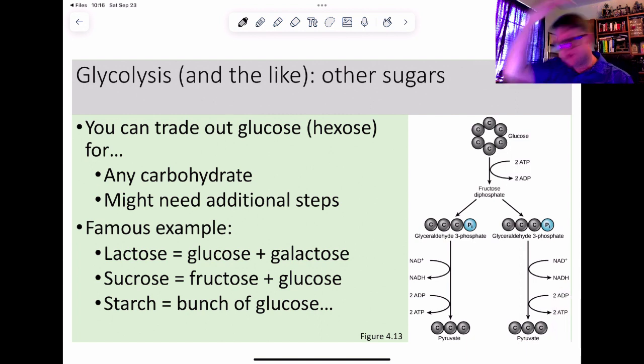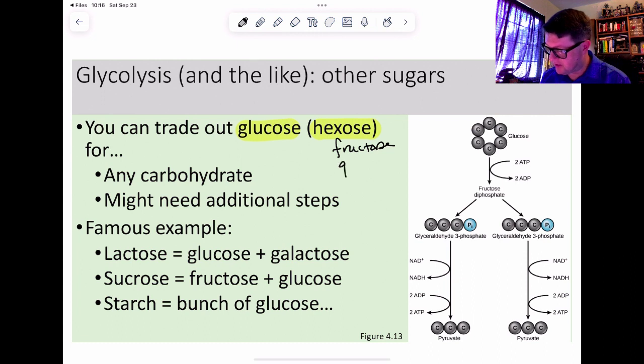How do we get things that aren't glucose into this? Well, it's simple. We can trade out glucose for any hexose. We have fructose, another very common one is galactose. What if we had glycerol? Glycerols are sugars. We've heard of glycerols before. Or starch. Starch is a bunch of glucoses. How do we digest starch? You take the starch and start ripping off all the glucoses.